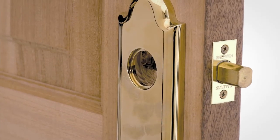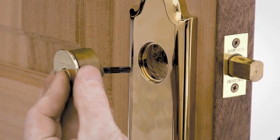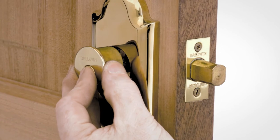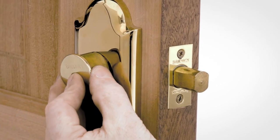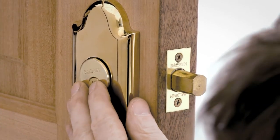Extend deadbolt with flathead screwdriver. Keeping tailpiece vertical, insert cylinder through outside handle set and into deadbolt. Hold in place. Do not insert key at this time.